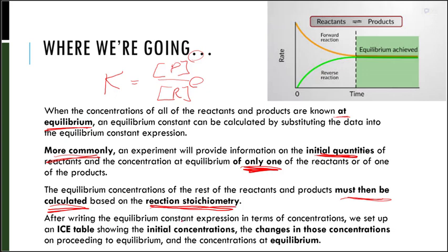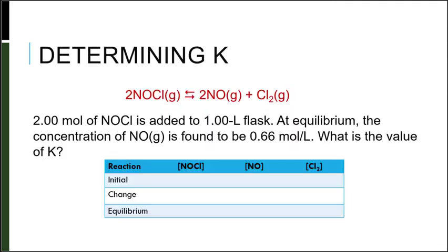After writing the equilibrium constant expression in terms of concentrations, we set up what we call an ICE table, showing the initial concentrations, the changes in those concentrations, and the concentrations at equilibrium. Let's do an example.